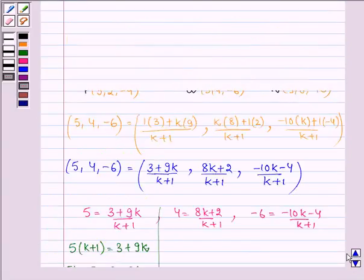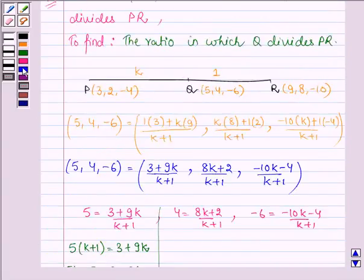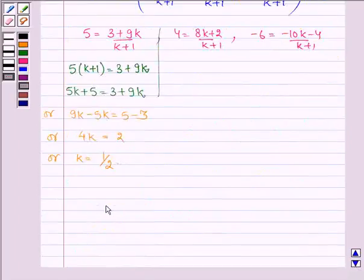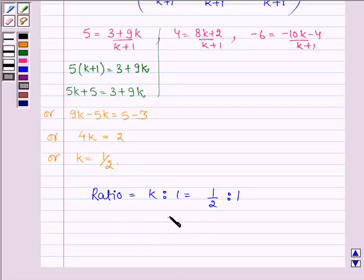Now we have considered the ratio as k is to 1, that is, half is to 1 is the ratio. Multiplying both sides of the ratio by 2, we have 1 is to 2. And hence the answer is the required ratio is 1 is to 2 internally.